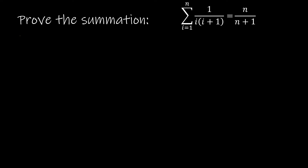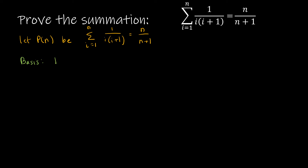The proof starts with: let P of n be the statement that the summation as i goes from 1 to n of 1 over i times i plus 1 is equal to n over n plus 1. Then we show our basis step — P of 1 is true. P of 1 says 1 over 1 times 1 plus 1 equals 1 over 1 plus 1. On the left side I have 1 over 2, and on the right side I have 1 over 2. That is, in fact, true.